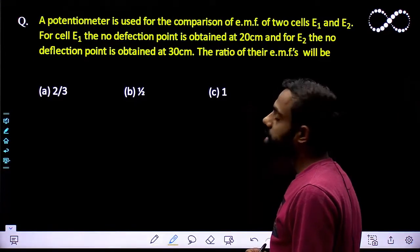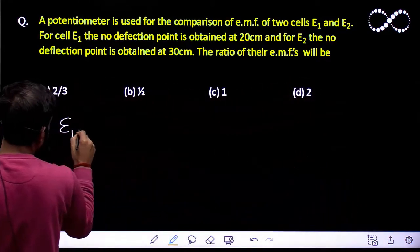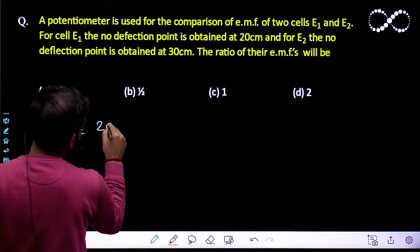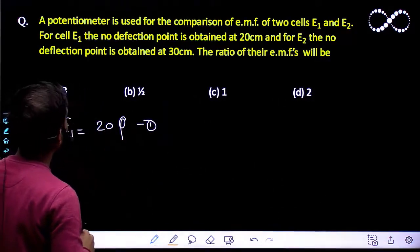So let us assume the potential difference per unit length is phi. So I can say from here E1 will be equal to 20 phi, and similarly for E2.